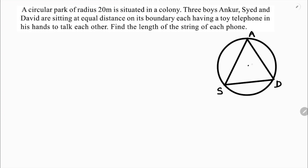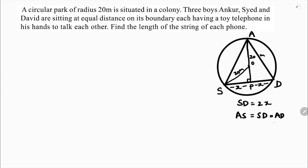Consider the center as O. The radius is 20 meters, so OS is also 20 meters. I will draw a perpendicular from O to SD, meeting at point P. Let SP equal X; then PD also equals X, because a perpendicular drawn from the center bisects the chord. So total SD equals 2X, and AS equals SD equals AD equals 2X.